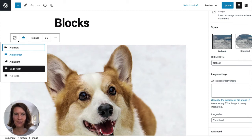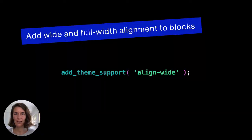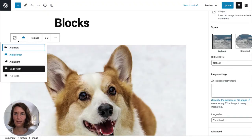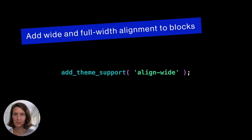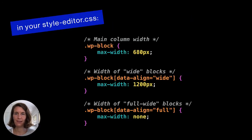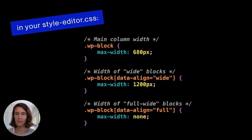I always add support for wide and full-width alignment because it's a really cool feature. With just one snippet — add_theme_support('align-wide') — you get support for wide and full-width alignments for all core blocks that support this option. In my example I use the image block. Then in your CSS, you need to include the pixel sizes of your default width, column width, wide align width, and full align width — those maximum widths need to be defined in the CSS.